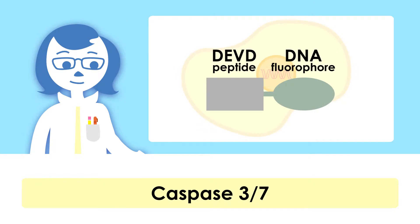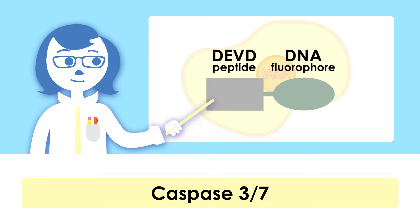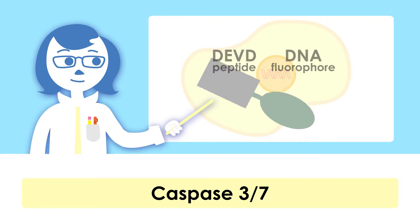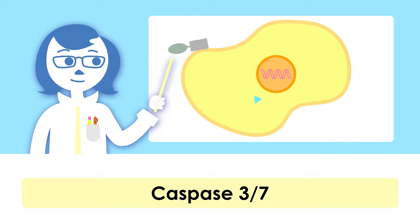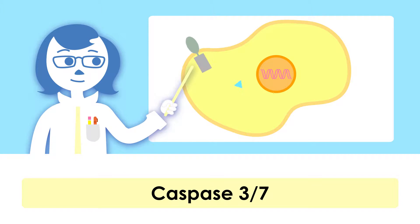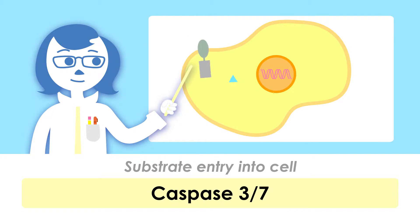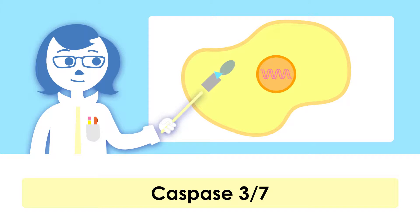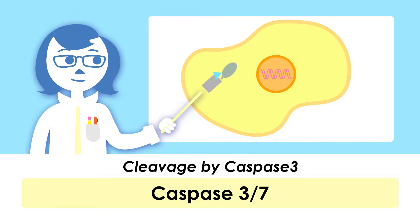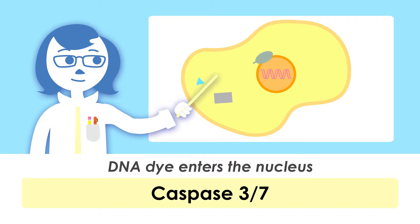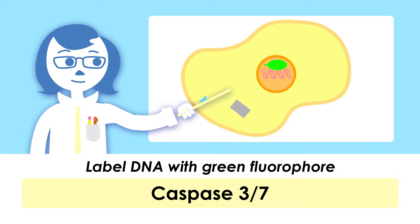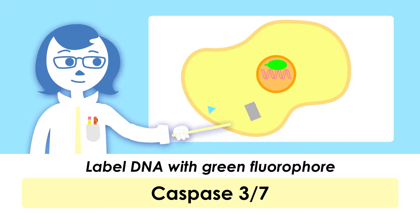DEVD is a caspase 3-7-specific sequence that is coupled with a DNA dye molecule. This substrate can freely diffuse across the cell membrane in live cells. Once inside apoptotic cells, the caspase 3-7 protein recognizes and cleaves the DEVD sequence, releases the DNA probe, and once the probe enters the nucleus, it binds to the DNA, producing a bright green fluorescent signal.